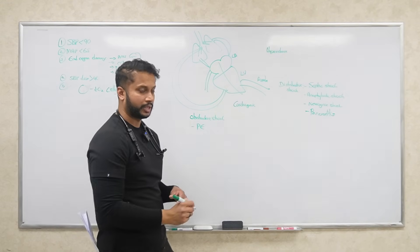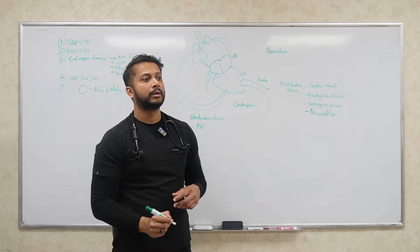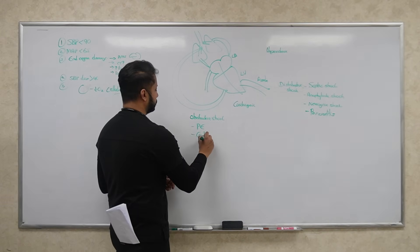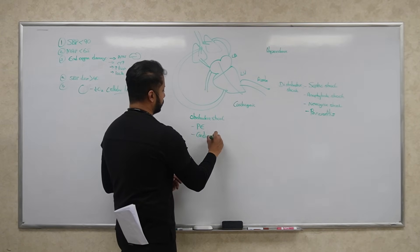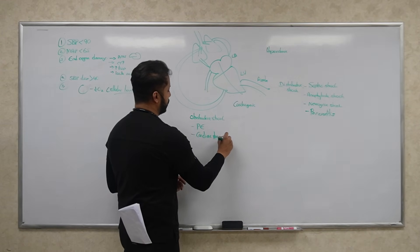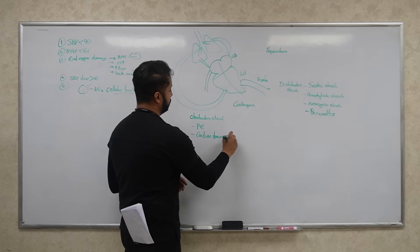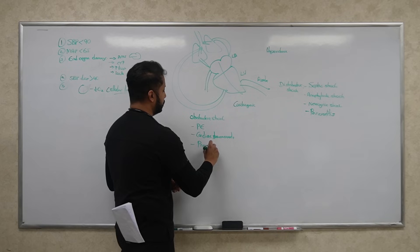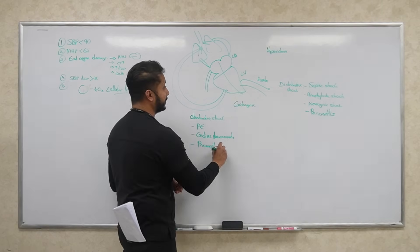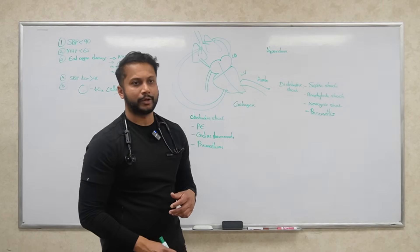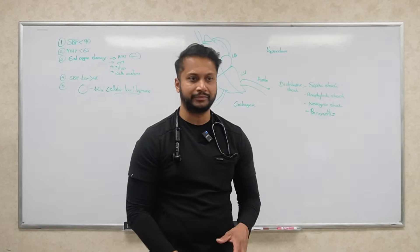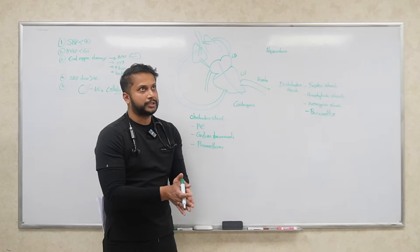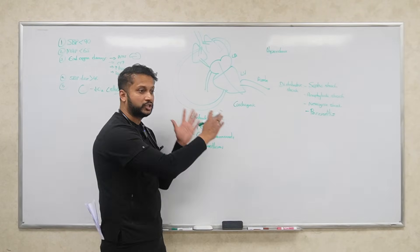Obstructive shock — important causes are PE, cardiac tamponade, and pneumothorax. Tension pneumothorax is the classic one, but a large regular pneumothorax can also cause obstructive shock.